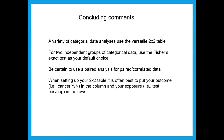That is the end of the talk. A few takeaways: you can do a variety of categorical data analyses using the 2×2 table — there are more than I presented today. For two independent groups of categorical data, use the Fisher's exact test; say in your data analysis plan that you will use Fisher's exact unless your program says your sample size is too large and defaults to chi-square. Use a paired analysis for correlated or paired data — don't treat them as independent. When setting up your 2×2 table, put your outcome in the columns and your exposure or test in the rows.